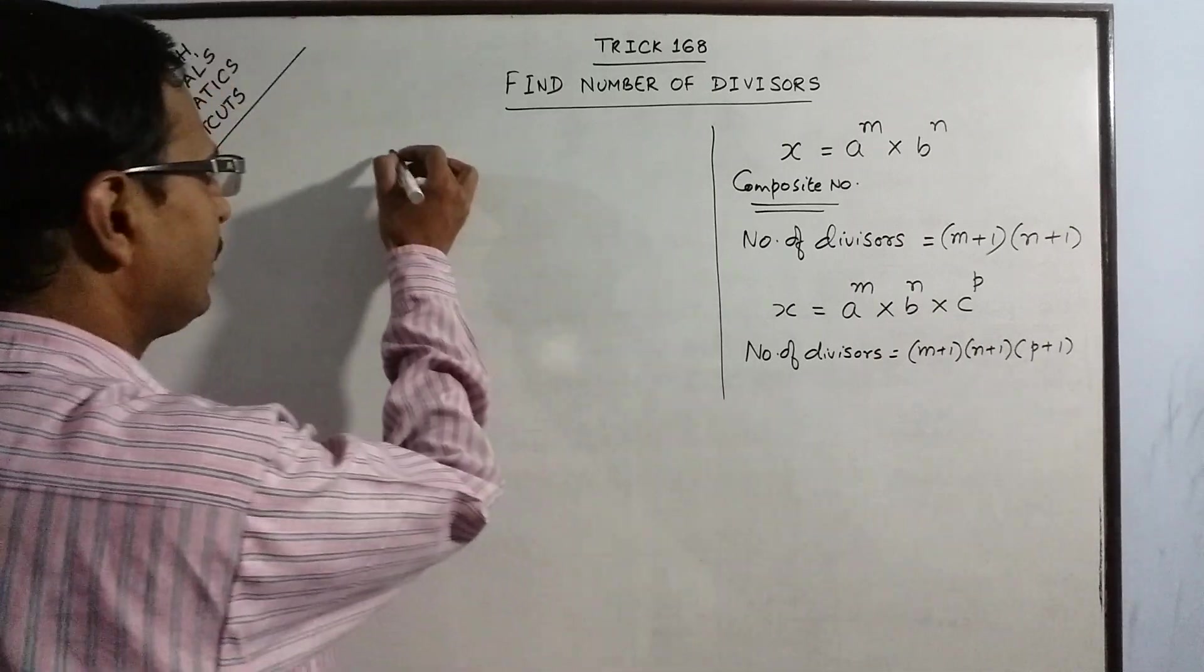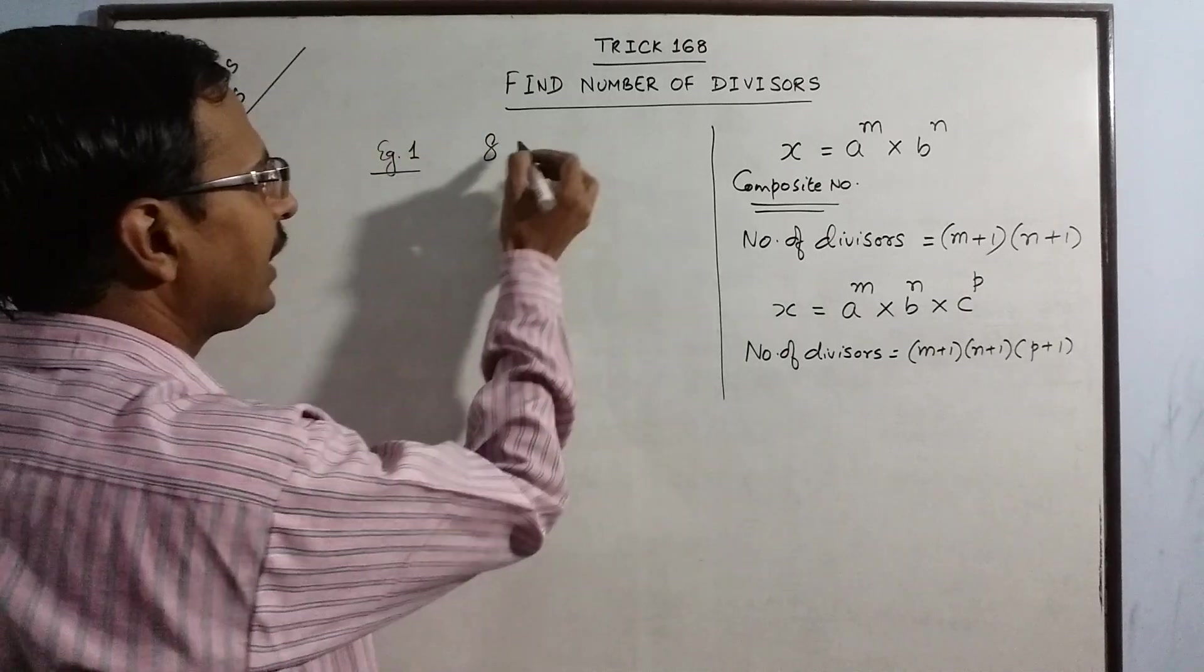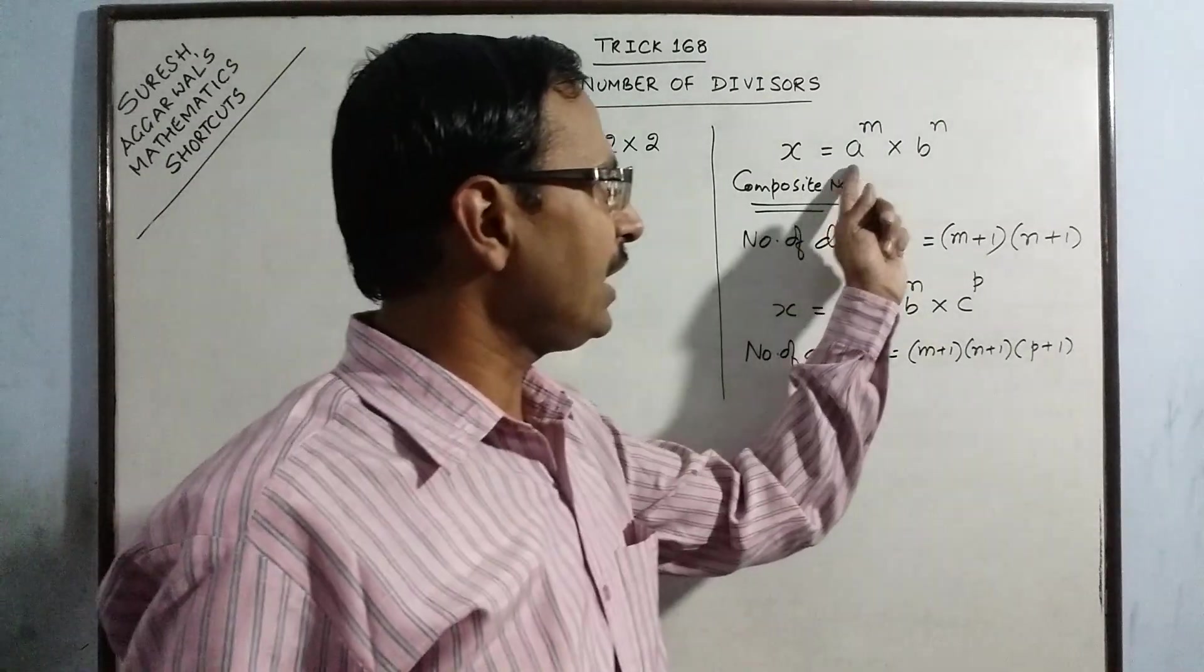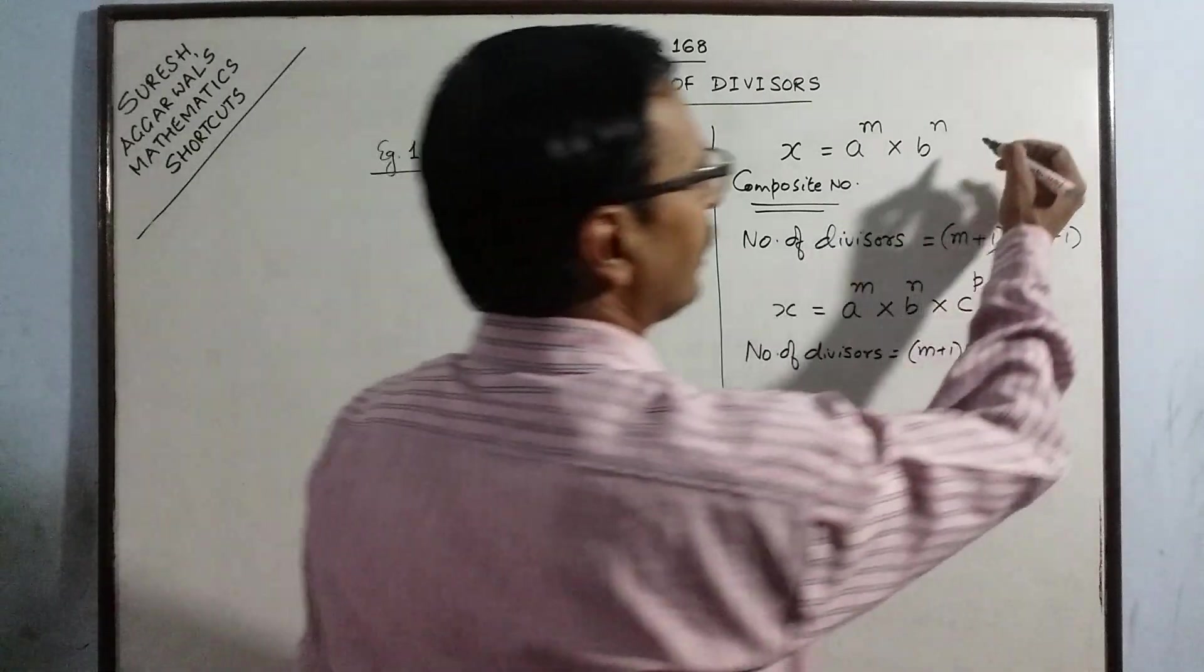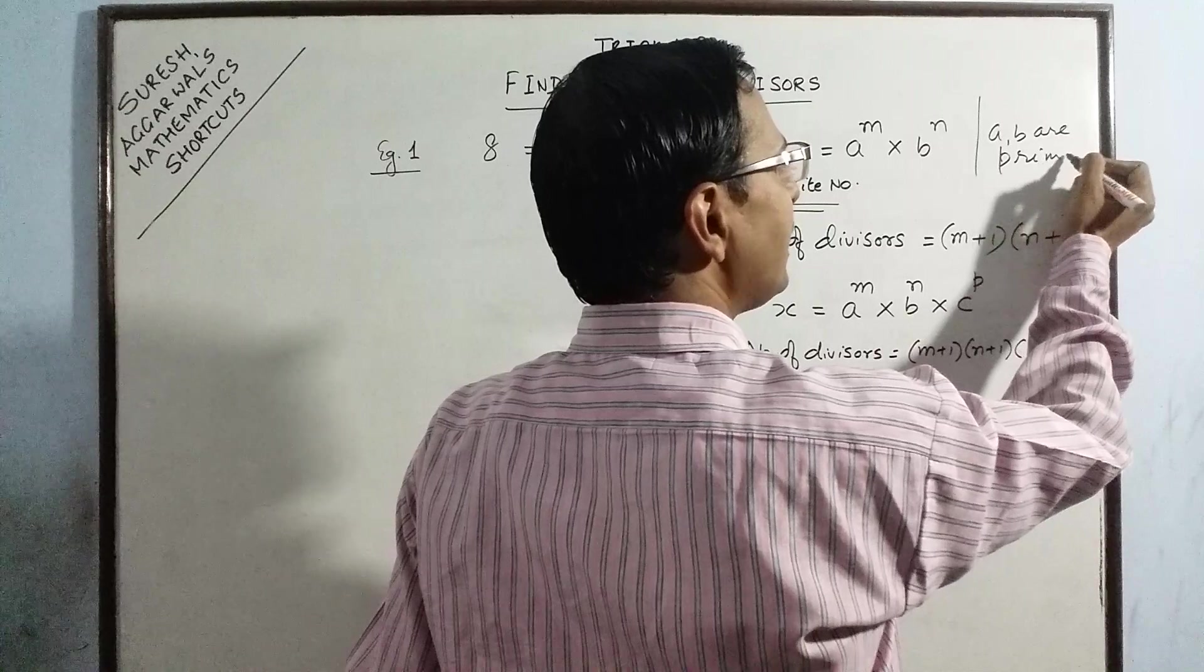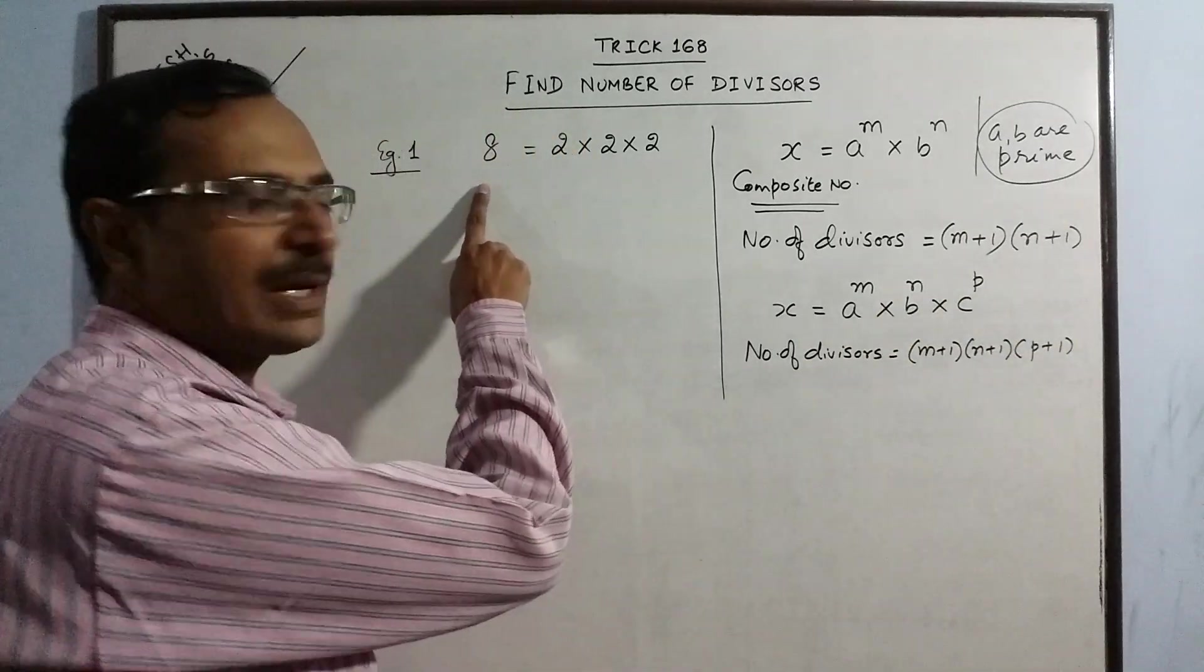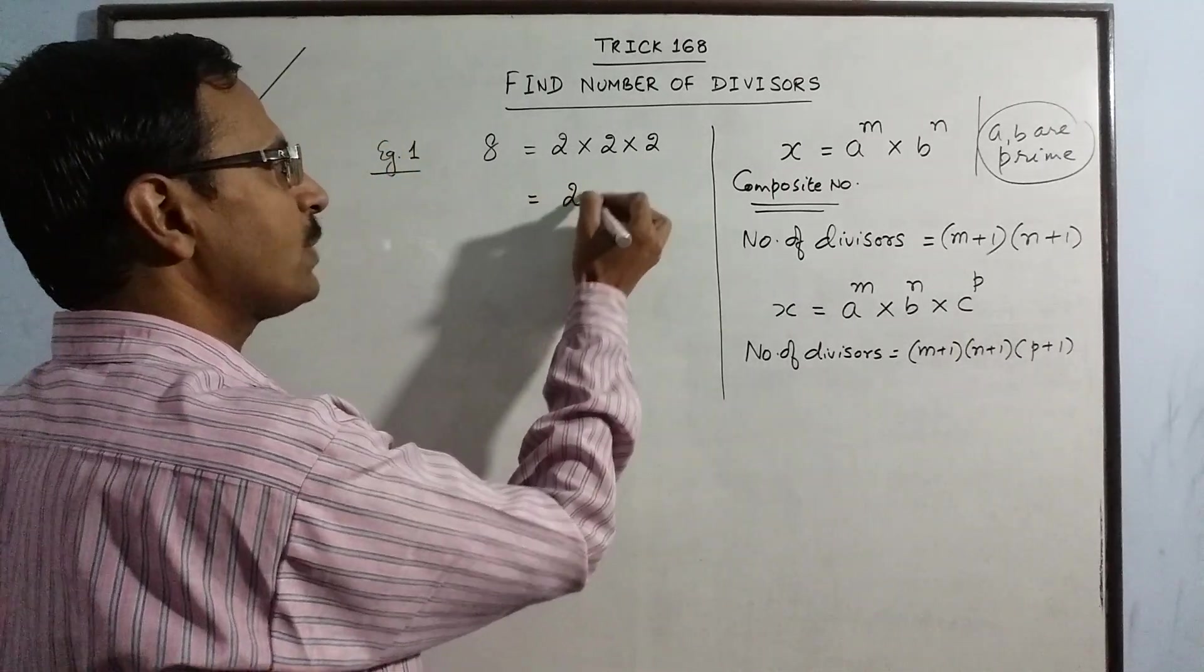Suppose we have to find the number of divisors of 8. Now 8 is expressed as 2 into 2 into 2. Now remember one important thing is that a and b the factors have to be prime. So a, b are prime. This is an important condition because if you do not make prime factors, then this result will not be true. So 8 can be factorized as 2 into 2 into 2, 3 prime factors, so this is 2 raised to power 3.